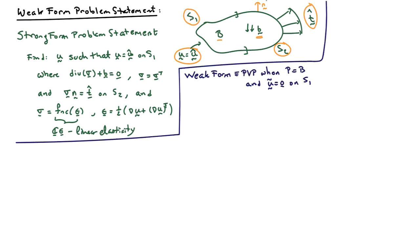The weak form statement of the problem is actually equivalent to the principle of virtual power applied to the situation where the domain is the entire body B, and we consider the special case where the virtual velocities ũ are equal to zero on S1 — the part of the boundary where the displacements are known. That special case generates the weak form statement.